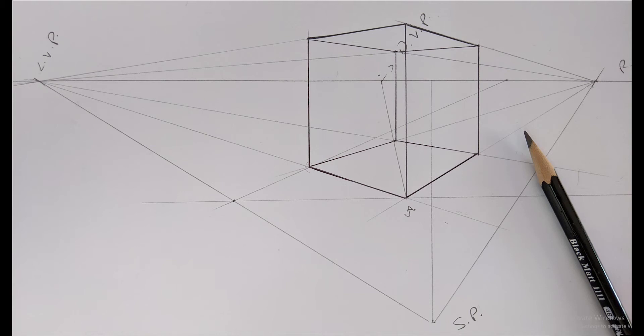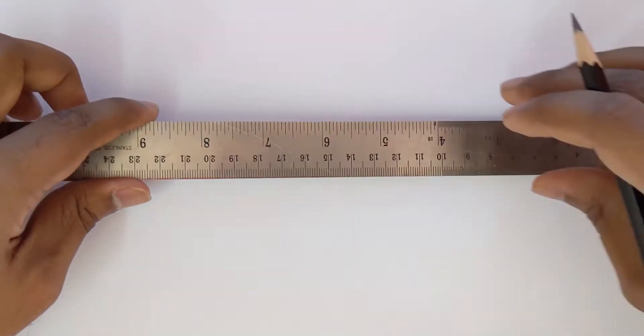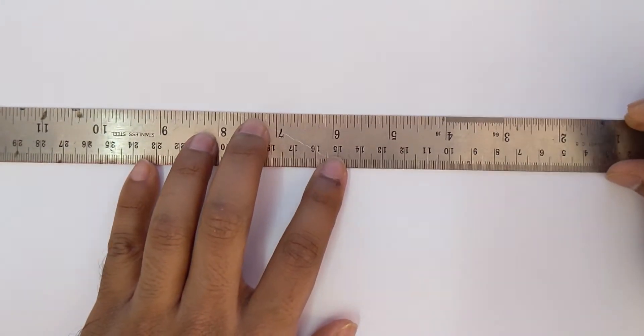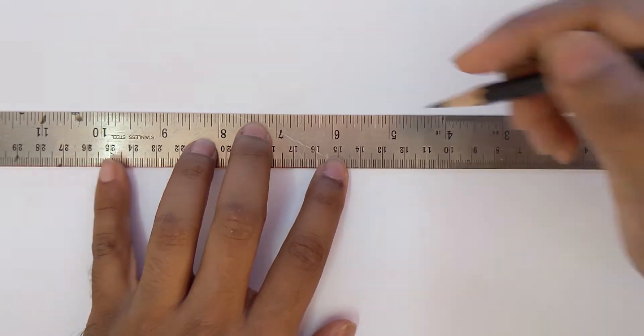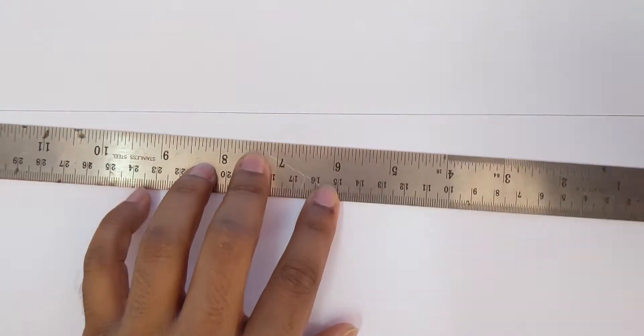Hello guys, welcome back to the channel. In this video we are going to learn how to draw a perfect cube in two-point perspective, so let's get started. The first step is to draw a horizon line anywhere on the page.